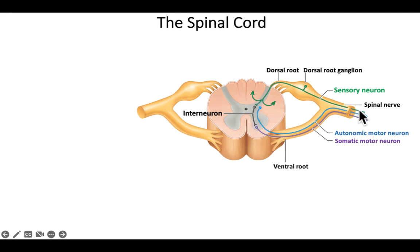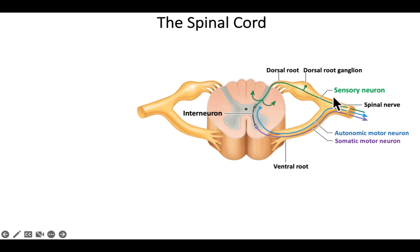Maybe you touched a hot stove, and we want the signal to go immediately back out so we can move that hand away from that stimulus. There's a lot of integration determining where this signal needs to go using the gray matter, whereas the white matter is just going to be sending that signal very quickly up to the brain.